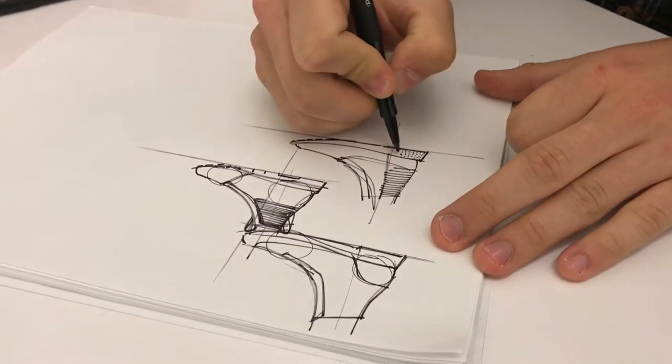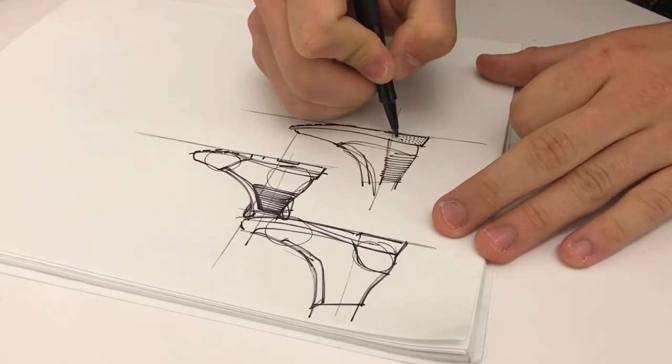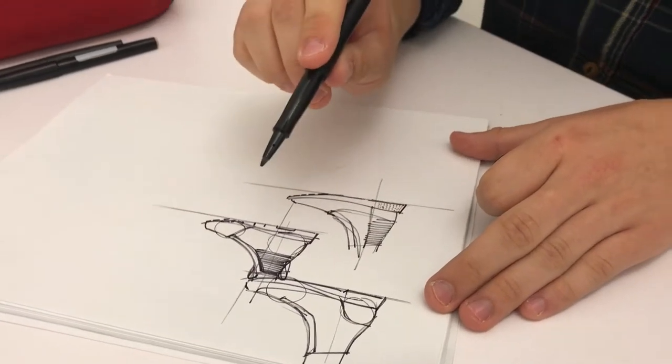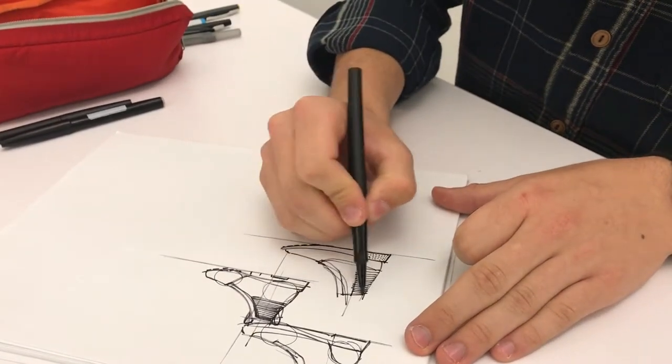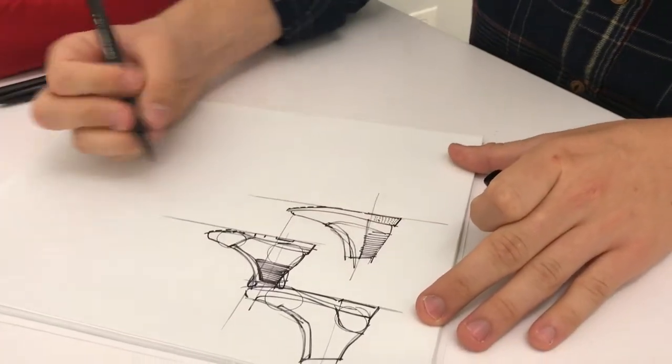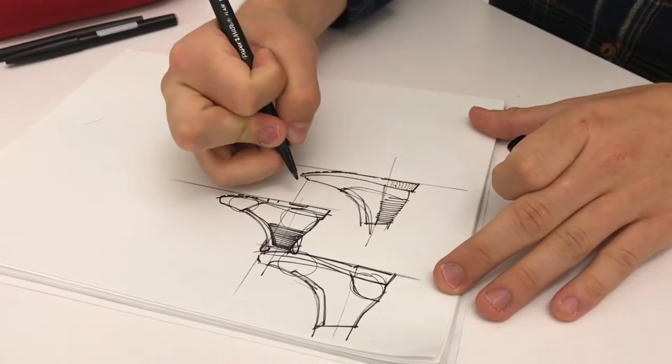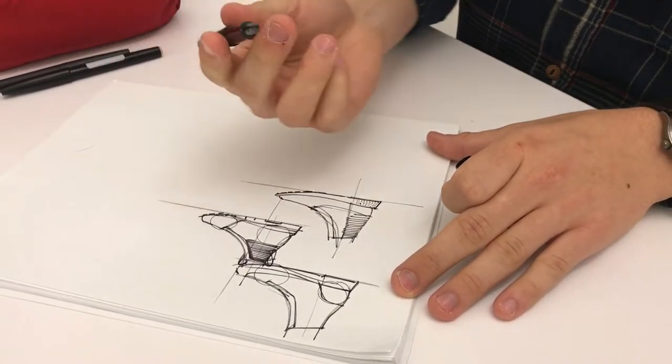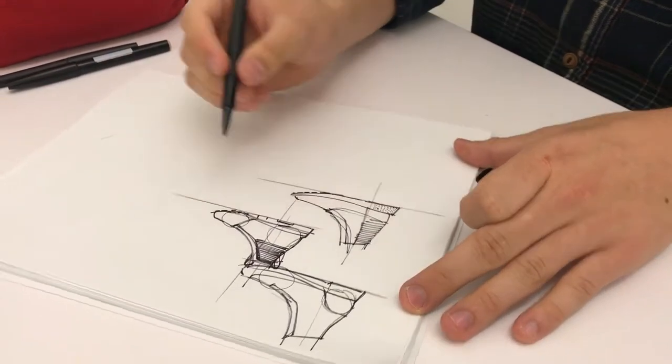But as I spent that summer sketching with Steve, he showed me that holding a pencil like this actually gives you a lot more fluidity and allows you to throw lines. Your hand's not all tight like this. If you want to sketch fluidly, that starts even with how you hold a pen or a pencil.